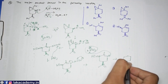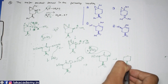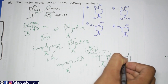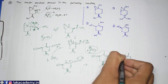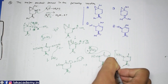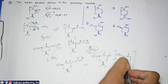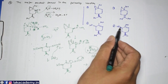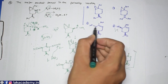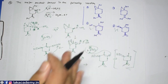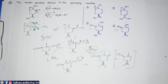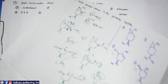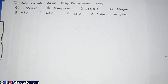The final product has a double bond with –OH below the plane. Since –OH is below the plane in the product, the option showing –OH above the plane is incorrect. Option C is the correct answer.